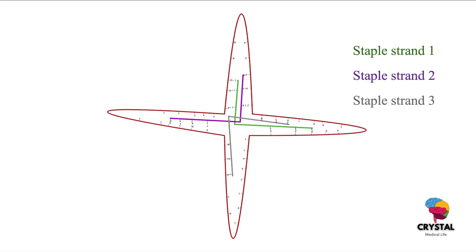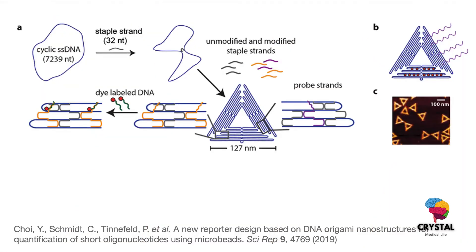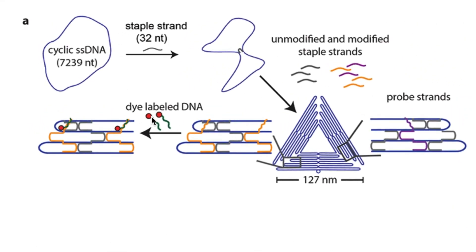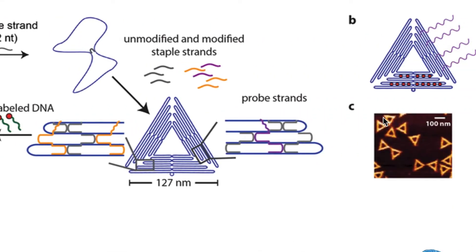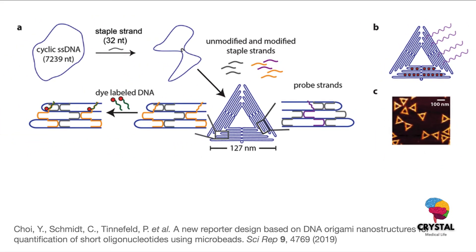This is a simple design of DNA origami in a star shape. You can create very complex DNA structures using other methods. As you can see in this study, the authors applied fluorochrome as well so that you can visualize the DNA structure under immunofluorescence microscopy.